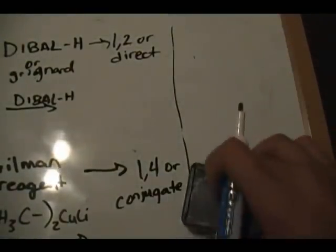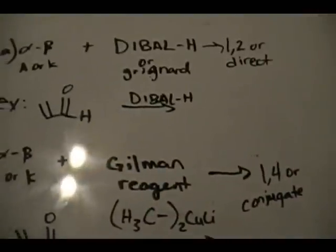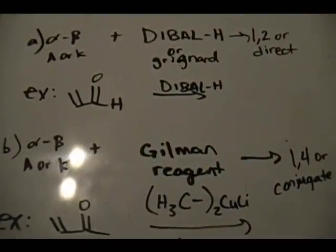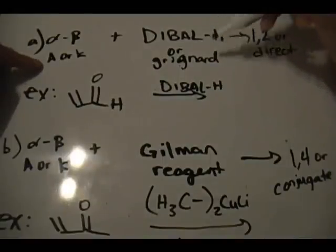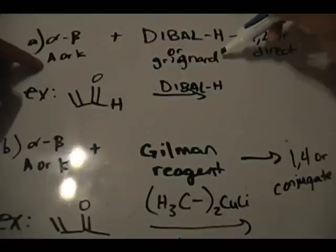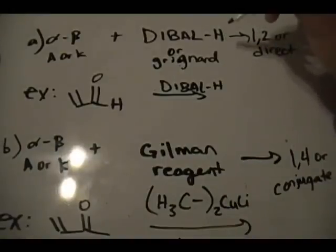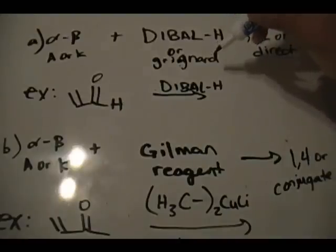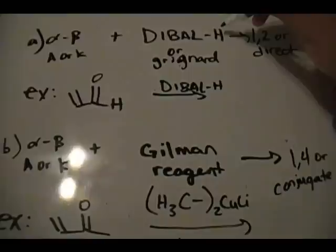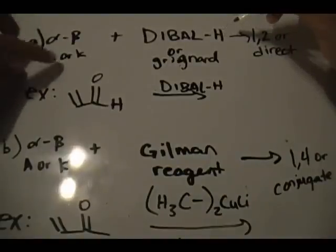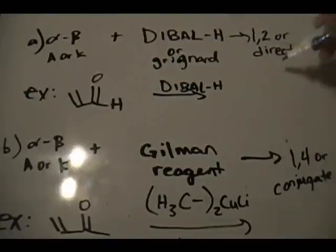Let's get into what we have on this board. In the first case, we have an alpha-beta unsaturated aldehyde or ketone reacting with DIBAL-H or the Grignard reagent. DIBAL-H provides a hydride ion as a nucleophile, just like the Grignard reagent provides an R group as a nucleophile. Reacting with one of these reagents gives you a 1,2 addition, also known as direct addition.